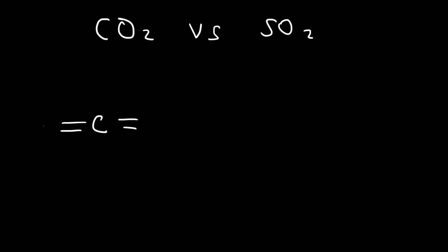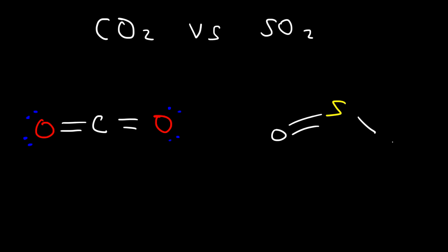So this is carbon dioxide — that's the Lewis structure for it. And on the right we have sulfur dioxide, which has a bent molecular geometry as opposed to the linear molecular geometry that we see in CO2.